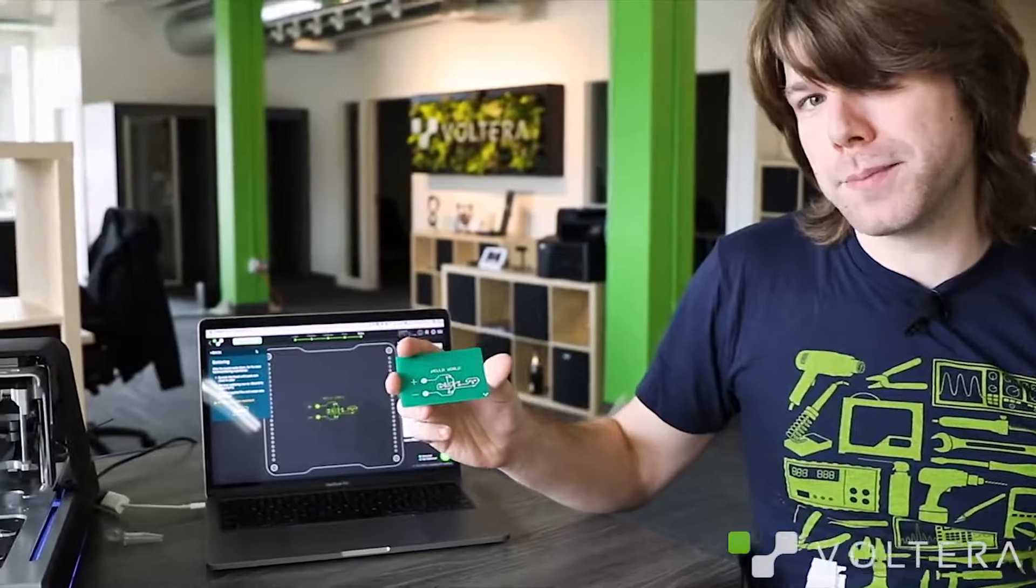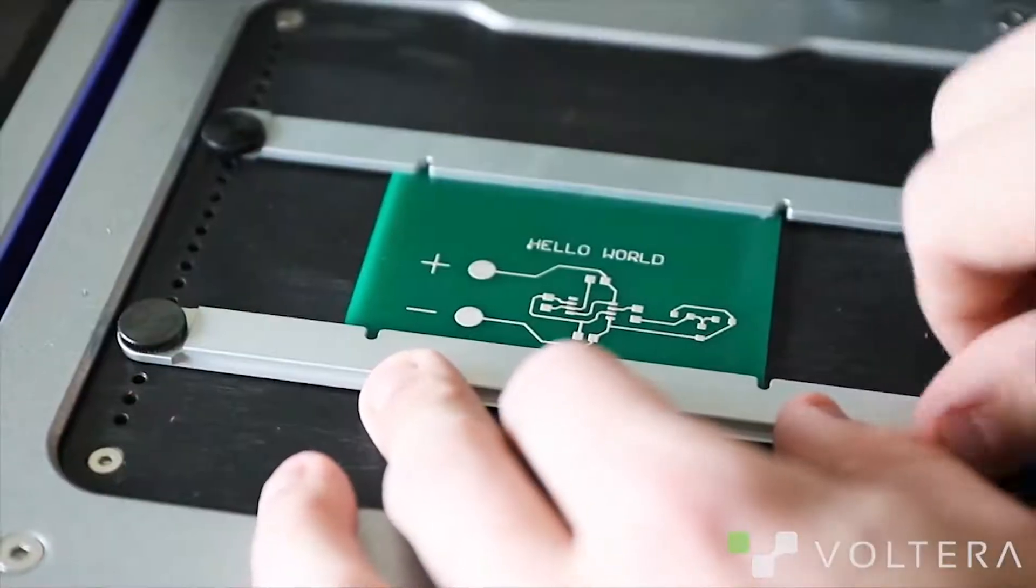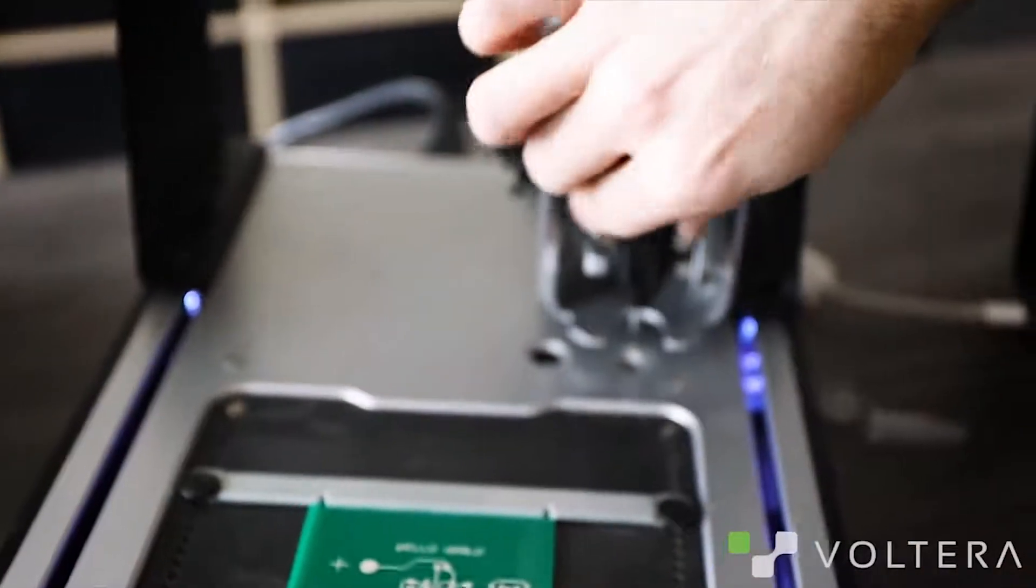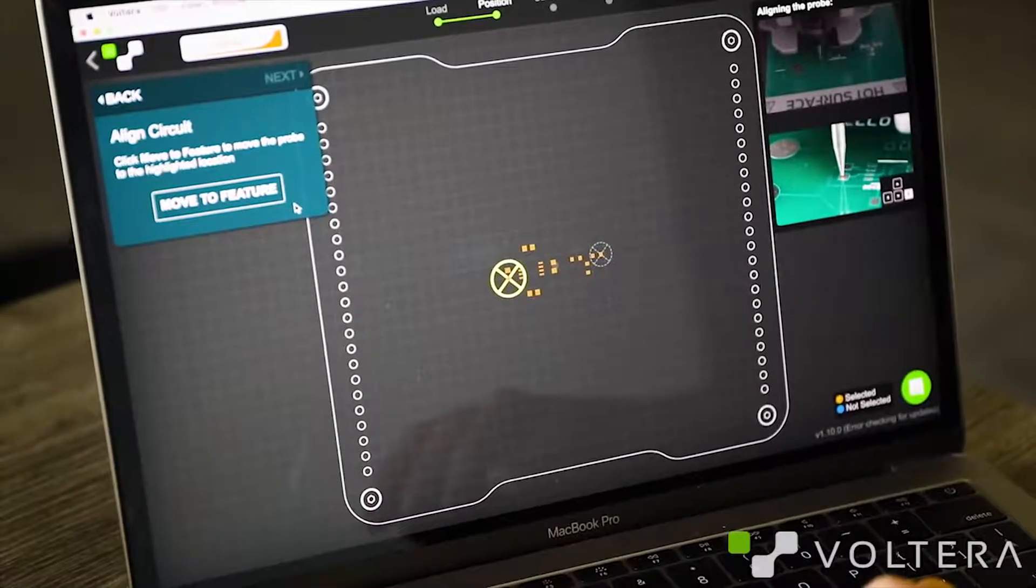Now that we've finished burnishing, the next step is to clamp our board down and dispense paste on it before we can populate. So, like before, the probe needs to map the board so the V1 knows where to put the solder paste. To do that, I'm going to teach it where two of the pads are and it will figure out the rest from there.